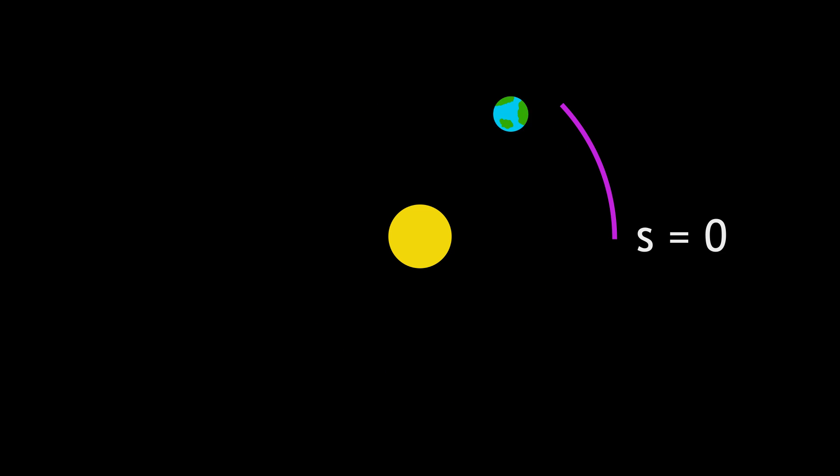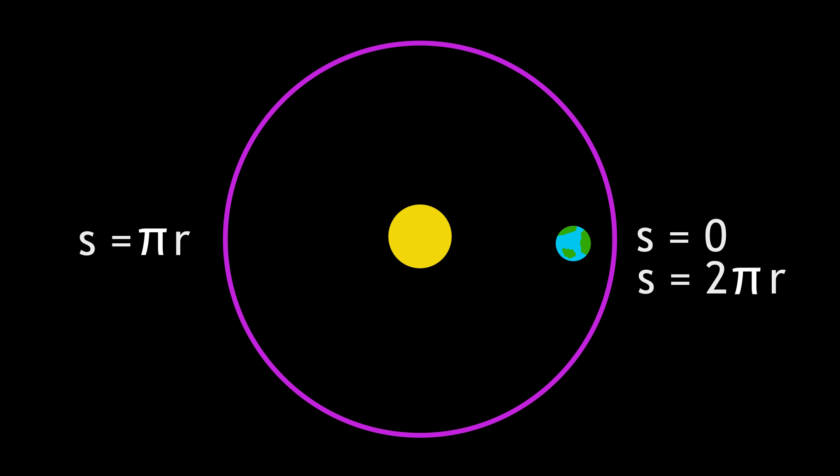Let's define the variable s to be its position in the orbit. So s goes from 0 to 2 pi r, the circumference of the circle. Now let's do something a bit strange, and consider s as a random variable. Now I just said that the Earth is equally likely to be in two equal length segments of the orbit. So in other words, s is equally likely to take a value between any two equal length segments.